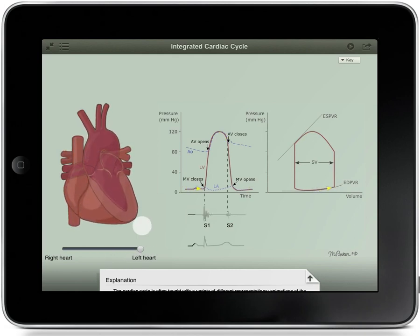When the heart is paused, you can drag your finger over the time axis to move through the cardiac cycle.